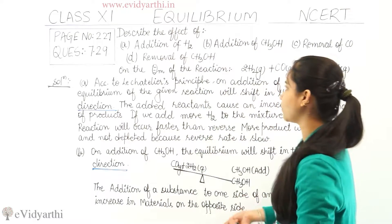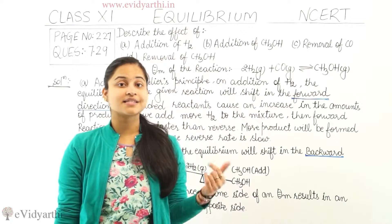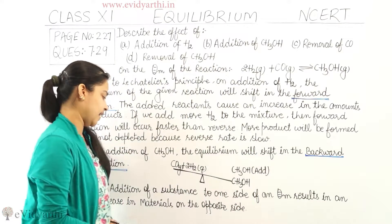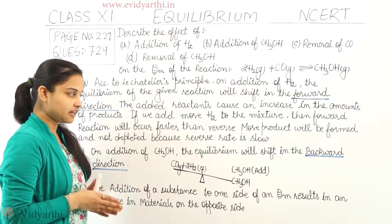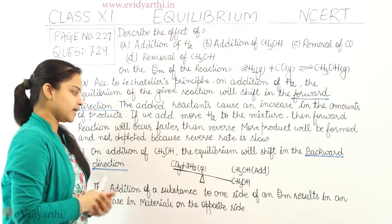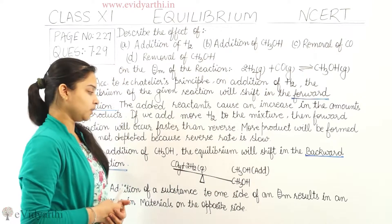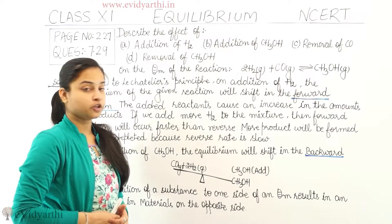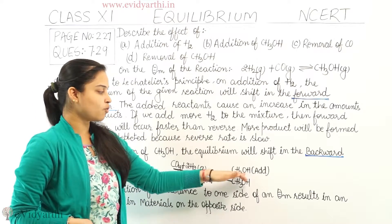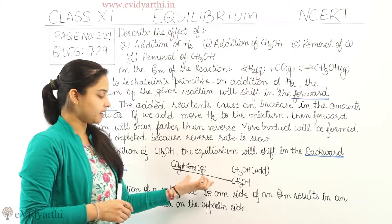Now, coming to Part B of the question: what will be the effect on the equilibrium mixture if we are adding CH₃OH — methanol? On addition of CH₃OH, the equilibrium will shift in the backward direction. I have shown a beam balance here: on one side are the reactants and on the other side is the product. If we add more CH₃OH, the beam balance will become imbalanced because more CH₃OH has been added to it.